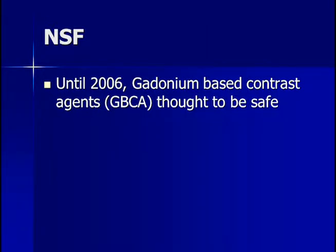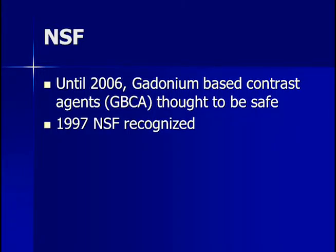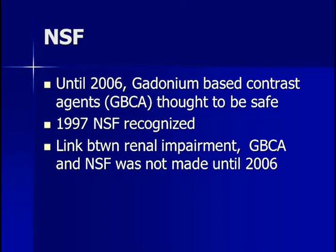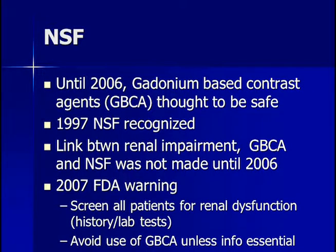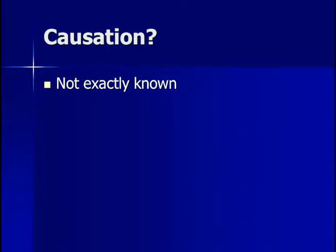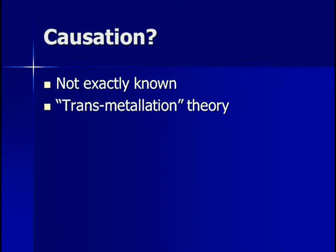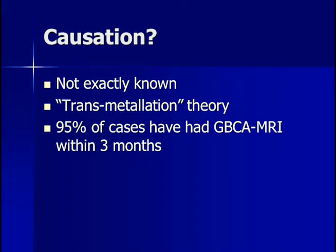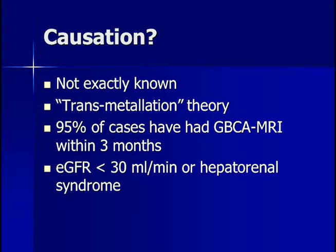Until 2006, gadolinium-based contrast agents were thought to be safe and were used in patients with renal failure who couldn't undergo CT scans. NSF was first recognized in 1997, but the link between gadolinium-based contrast agents, renal impairment, and NSF was not made until 2006. In 2007, the FDA produced a warning against using gadolinium-based contrast agents in patients with severe renal dysfunction, and recommended screening patients with any possible renal dysfunction. The cause for NSF is not exactly known, but there is a transmetallation theory. Essentially, 95% of NSF cases had been exposed to gadolinium-based contrast agents within three months, and all patients had eGFRs of less than 30 mL per minute or hepatitis.